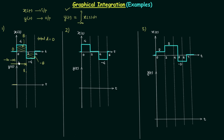The area increases linearly as t increases, so we join those two points with a straight line. When t equals four, the total area from minus infinity to four is zero, and the area decreases linearly, giving us a downward slope in the waveform. Since zero is the total area, the integration continues with zero beyond t equals four up to infinity. This is how the waveform of signal yt looks for case one.